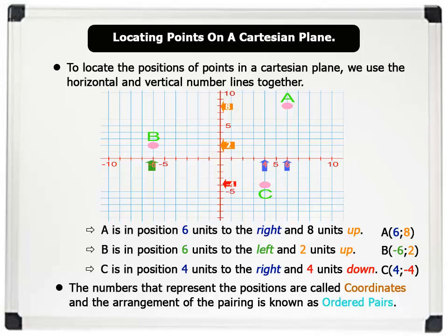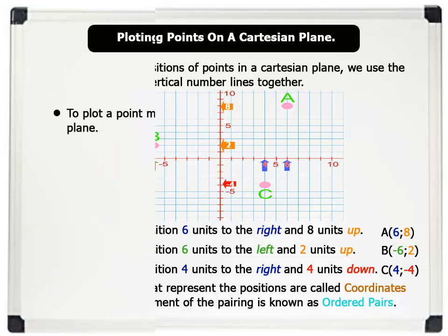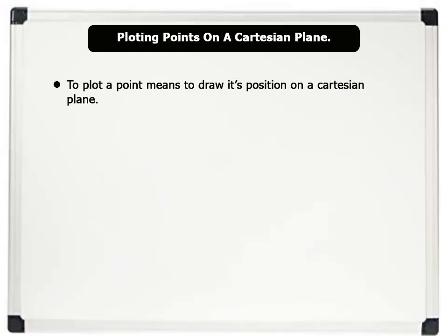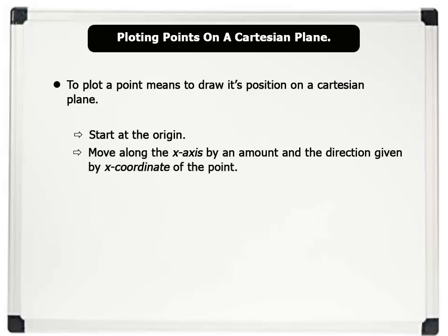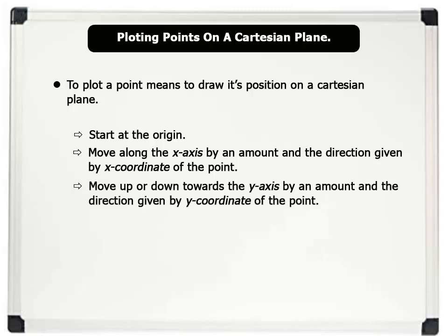Finally let us plot points on the Cartesian plane. To plot a point means to draw its position on a Cartesian plane. To do this we take the following steps: 1. Start at the origin. 2. Move along the x-axis by the amount and direction given by the x-coordinate of the point. And 3. Move up or down towards the y-axis by the amount and the direction given by the y-coordinate of the point.